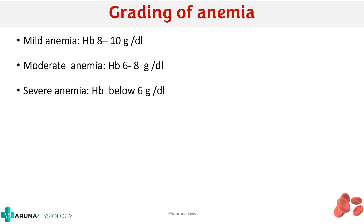There is also a grading of anemia. Mild anemia is considered as hemoglobin of 8 to 10 g/dL. Moderate when the hemoglobin is between 6 to 8 g/dL, and severe if hemoglobin is below 6 grams per deciliter.